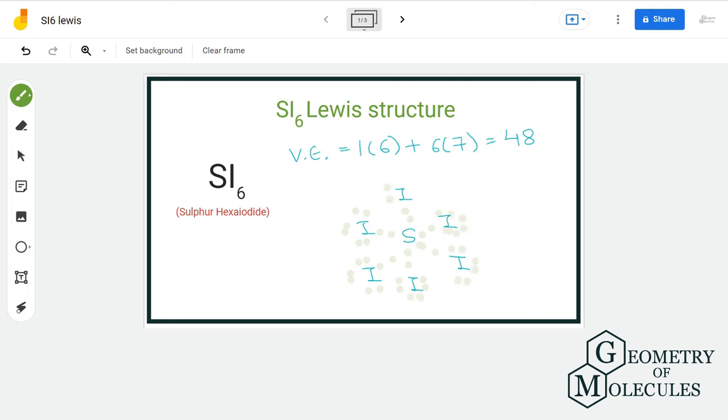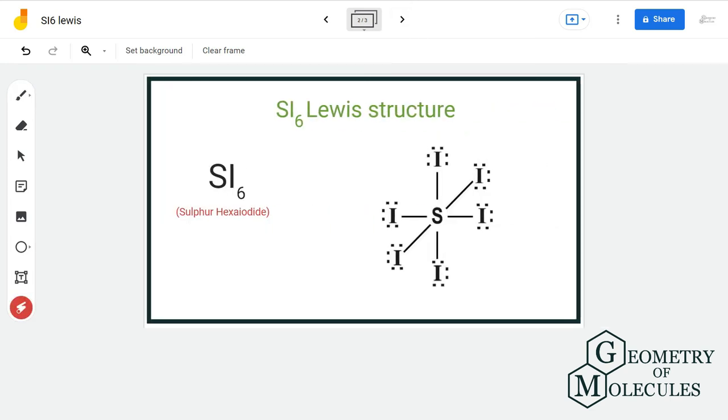Thus, every atom in this structure has complete outer shell and zero formal charge. And so, this is the final Lewis structure of SI6.